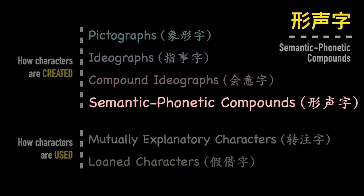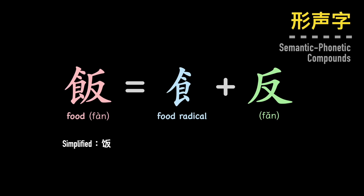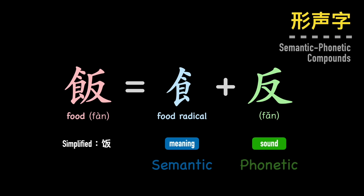The semantic phonetic compound — xing sheng zi — is also a combination of two ideas, but one component is a meaning component and the other is a sound component. In the character fan, which means cooked rice or food in general, the left component is a food radical showing the meaning of food, while the right component is pronounced fan, showing the pronunciation of the character.